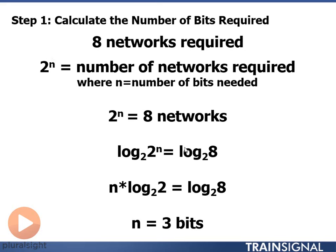We can solve that with logarithms. Log base 2 of 2 to the n equals log base 2 of 8. Once we apply the logarithm, we use the property that lets us move the exponent out as a multiplier, and then solve the equation — and we get three bits.